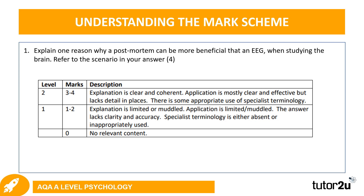At level one, the answer lacks clarity and accuracy, and specialist terminology is either absent or inappropriately used. To get zero marks, no relevant content would have been mentioned at all. You can really see the difference between the two mark bands: level two requires a clear, focused, coherent explanation using specialist terminology, while level one involves a more muddled explanation that may omit specialist terminology.